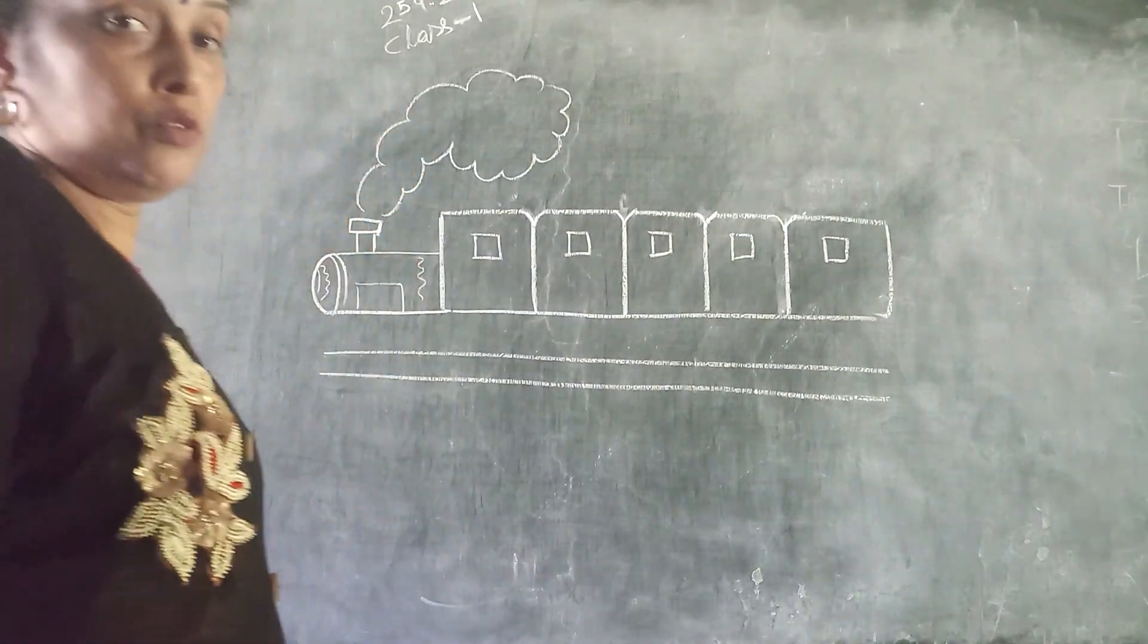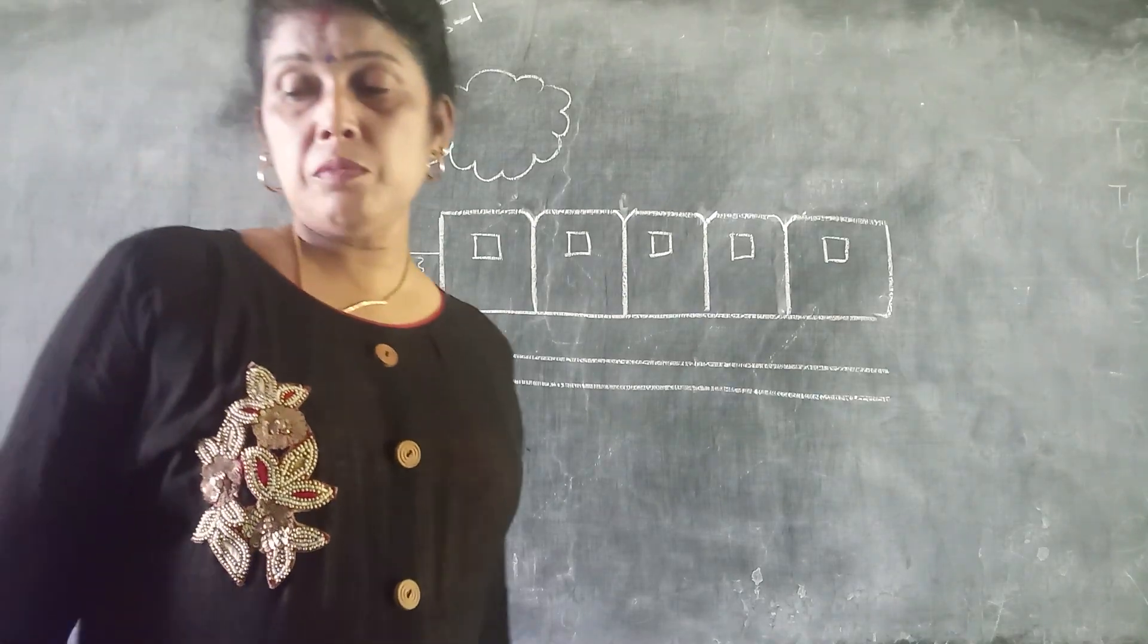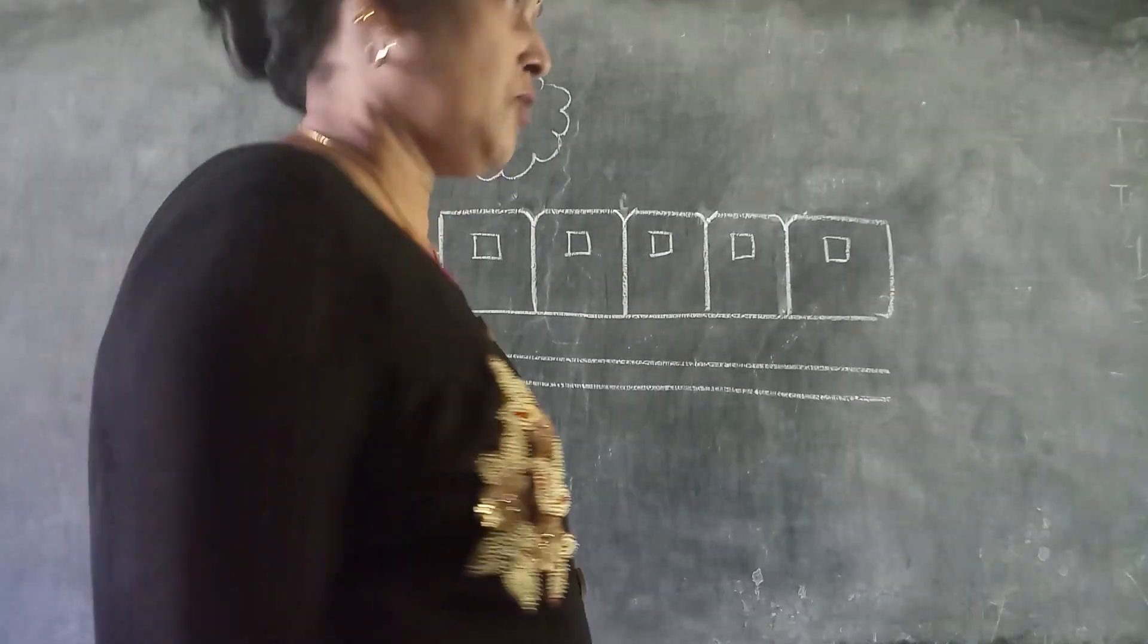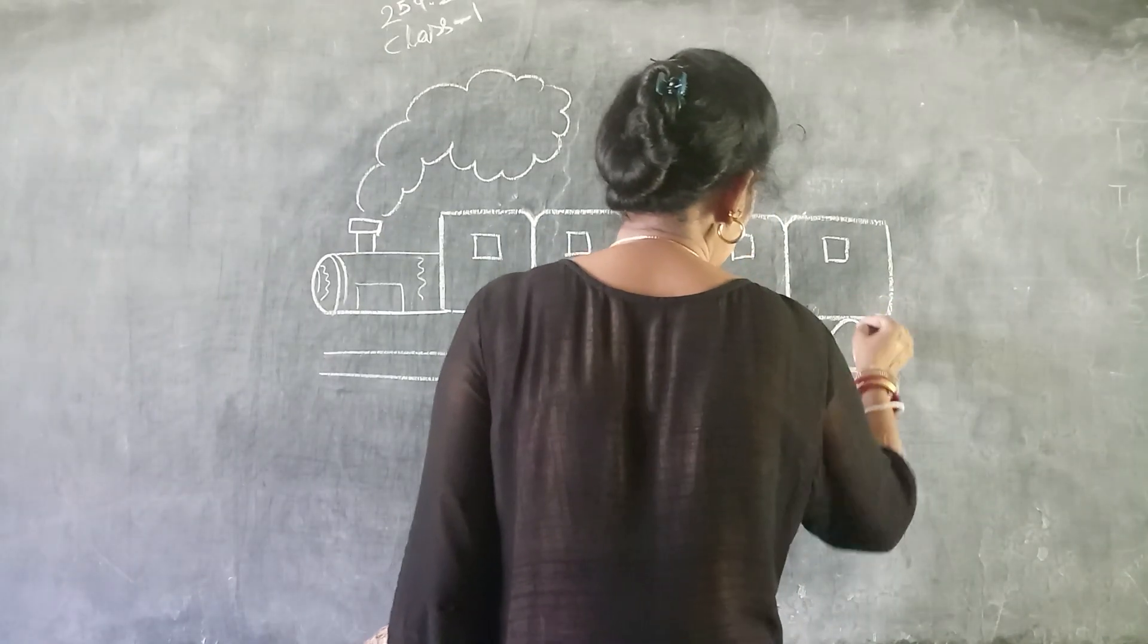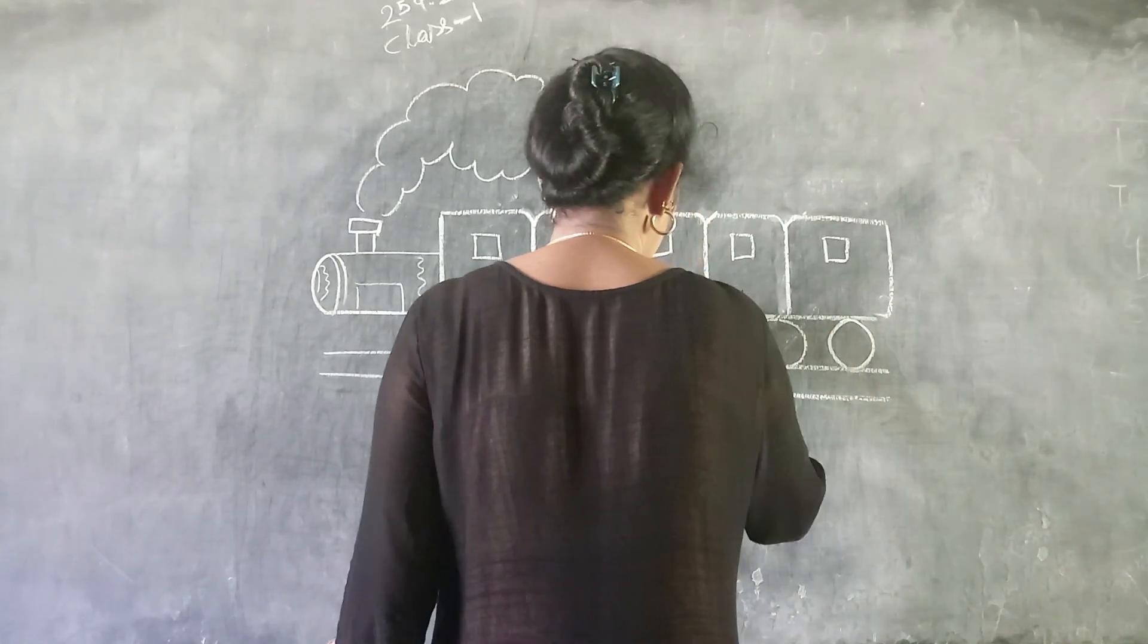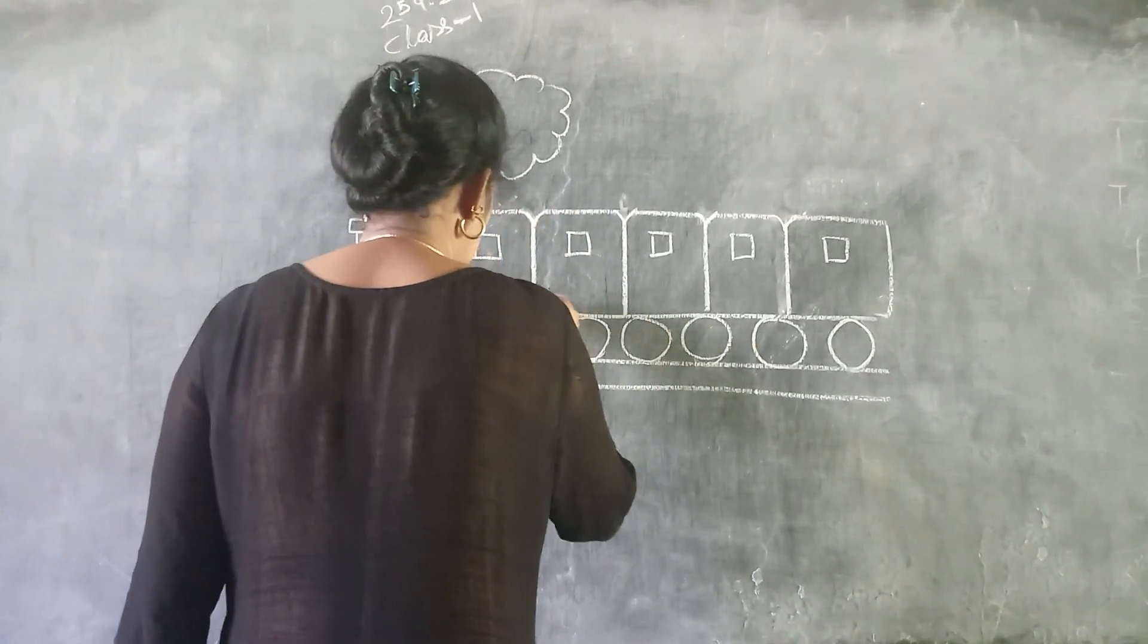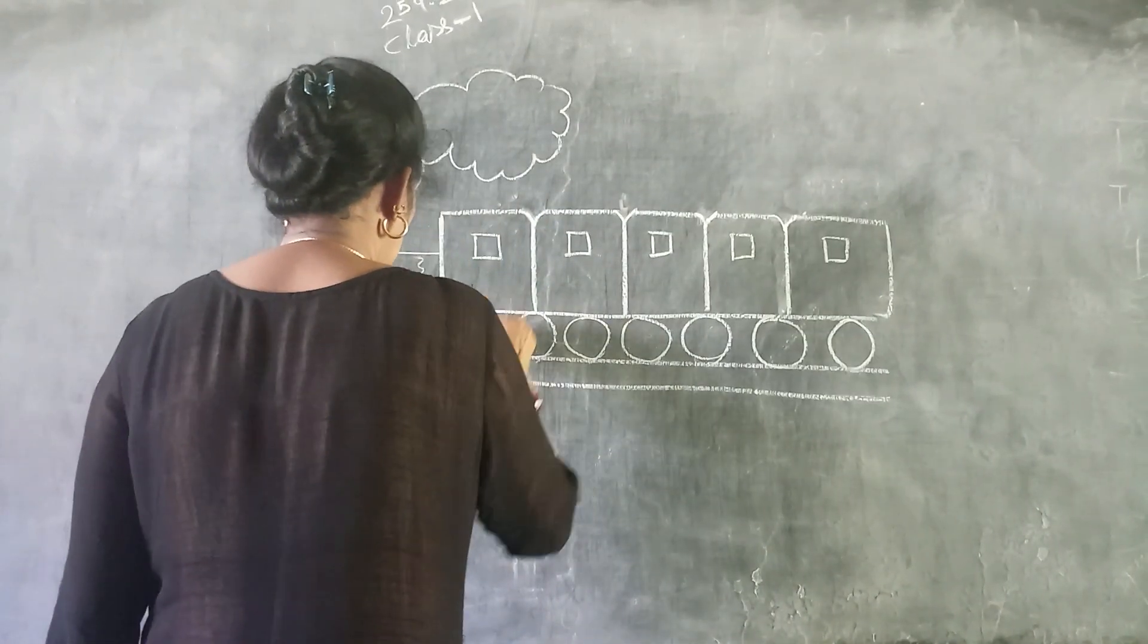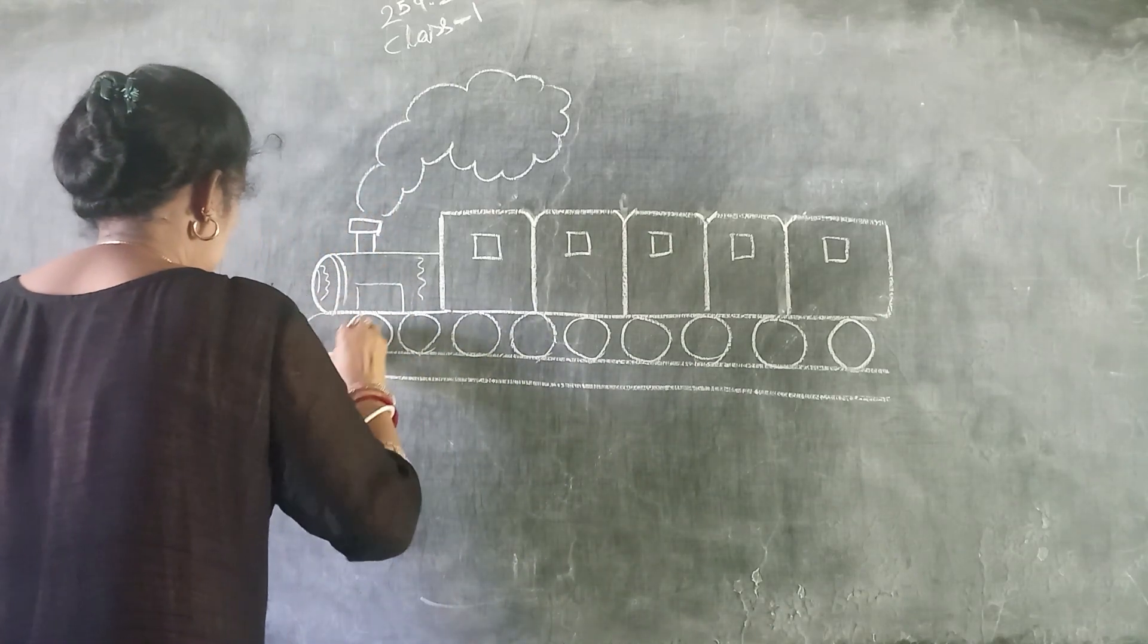Then you draw the wheels. That means you use the bendy. Bendy is one, two, three, four, five, six, seven, eight, nine, ten.